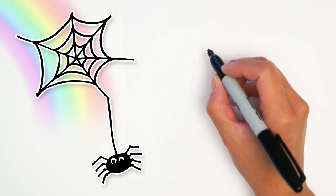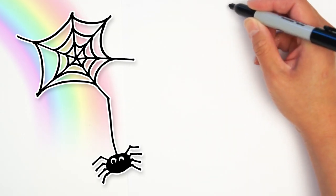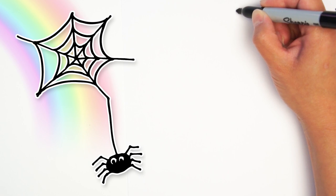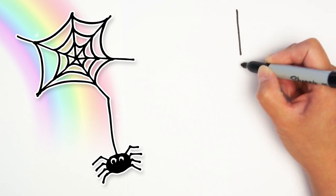Hi kids and welcome to Easy Kids Drawings. Today we are going to learn how to draw a spider dropping from a spider web. All right, start with one line going down and another line going out this way.